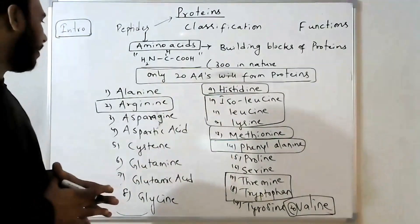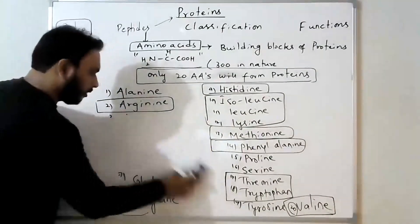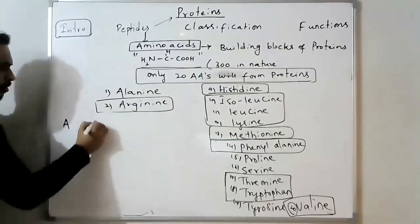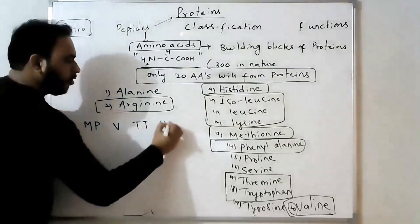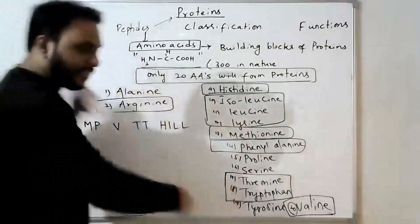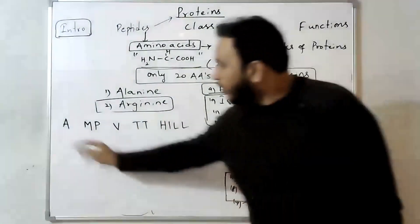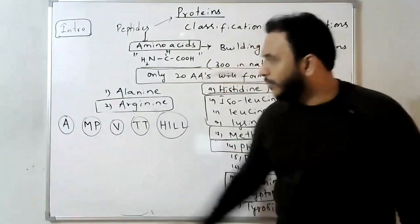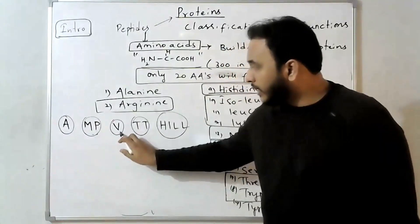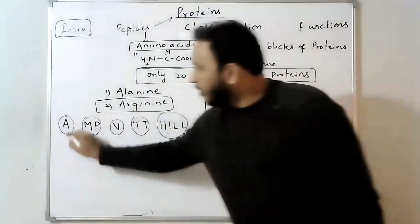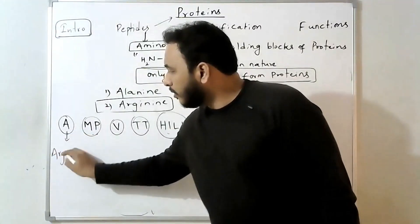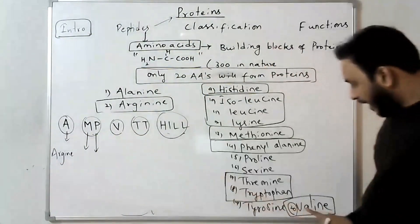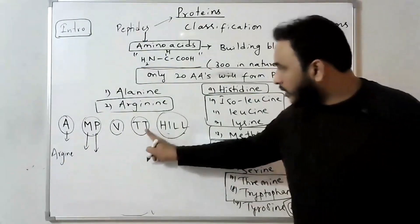To remember these essential amino acids, here is a shortcut: A, M, P, V, T, T, H, I, L — 'Andhra M P visited Thirumala, Thirupati, Hill.' A for arginine, M for methionine, P for phenylalanine, V for valine, T for threonine, T for tryptophan, H for histidine, I for isoleucine, L for lysine.